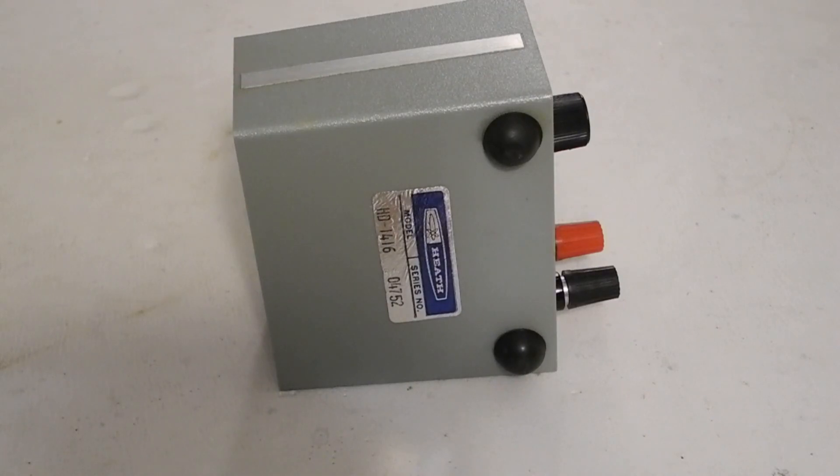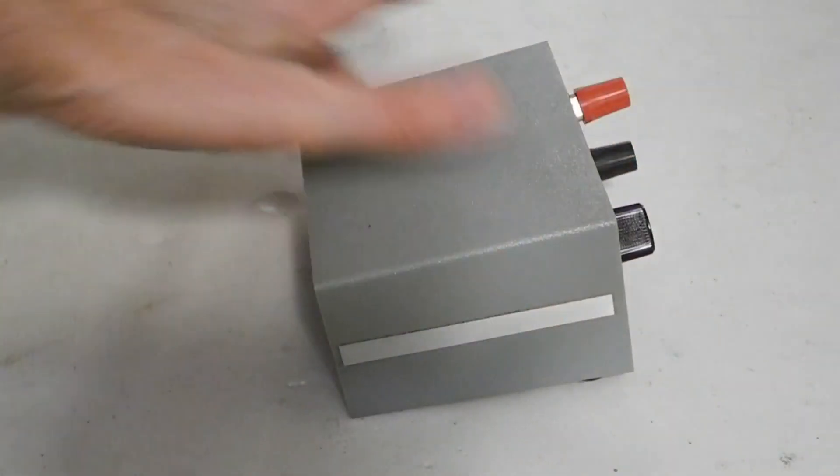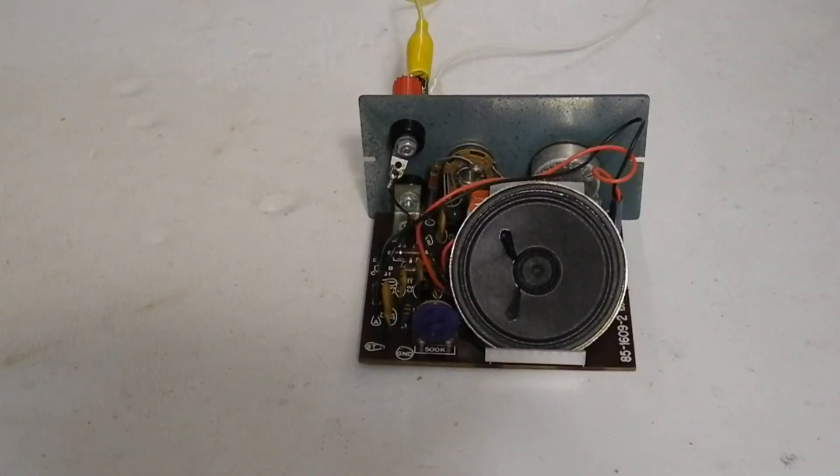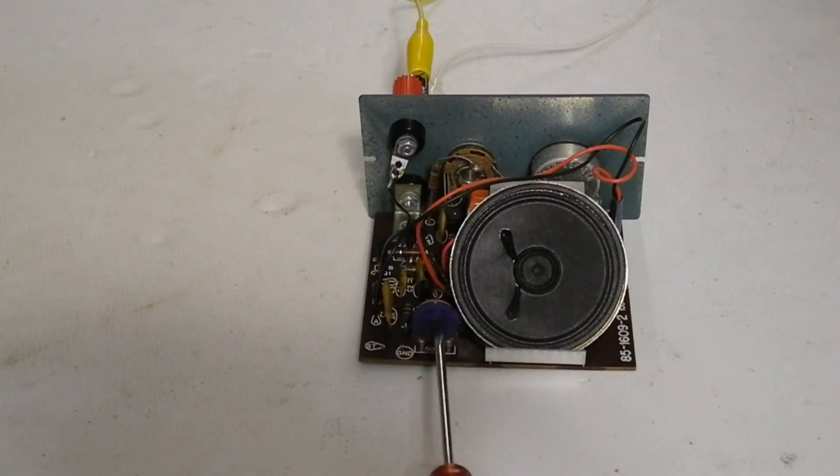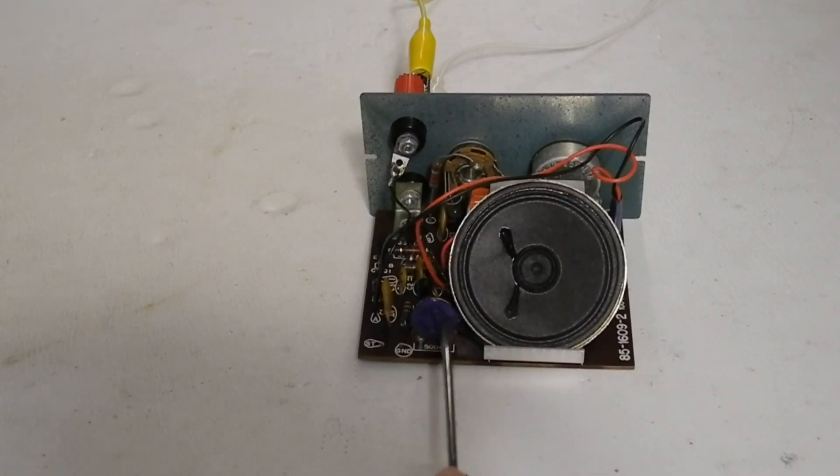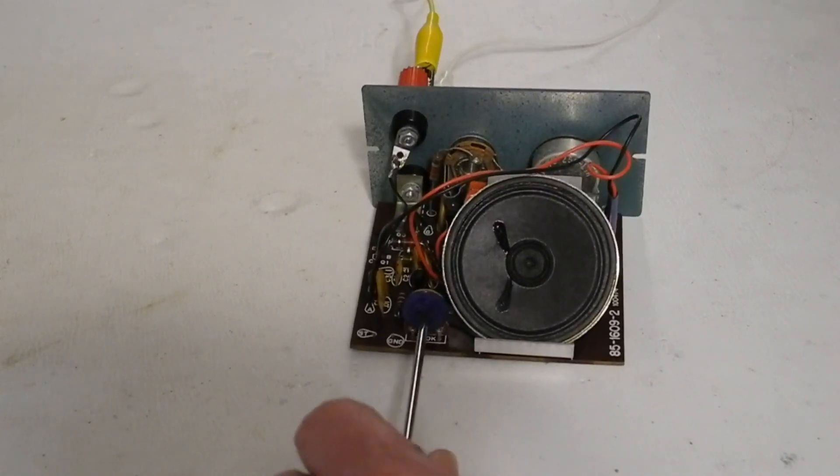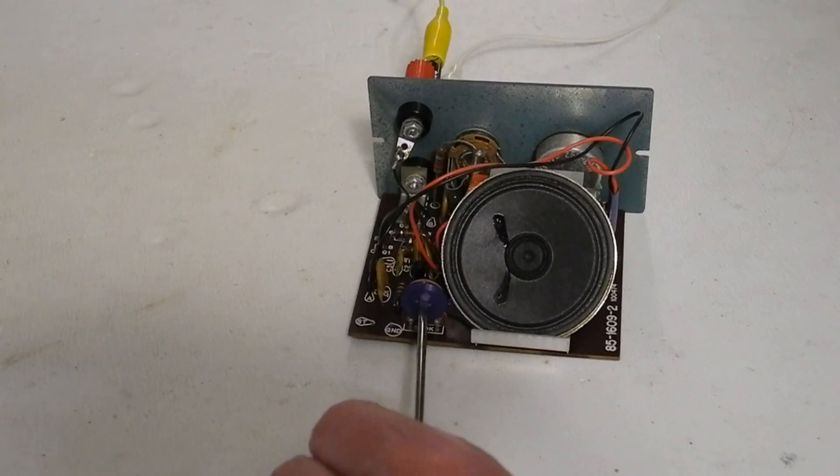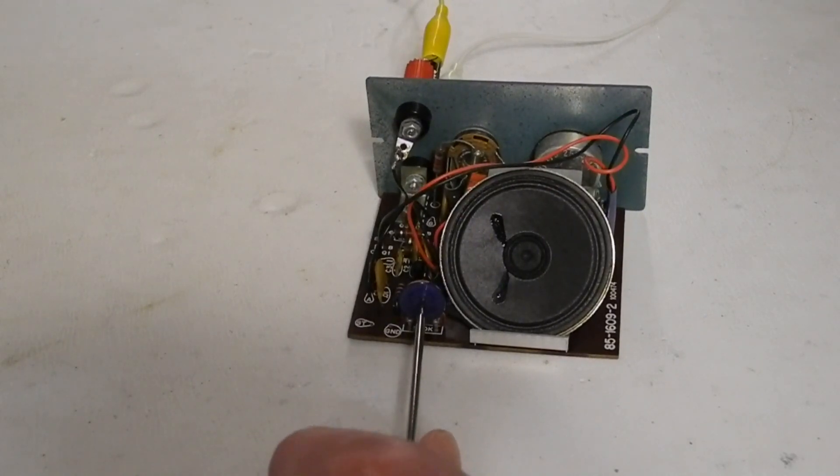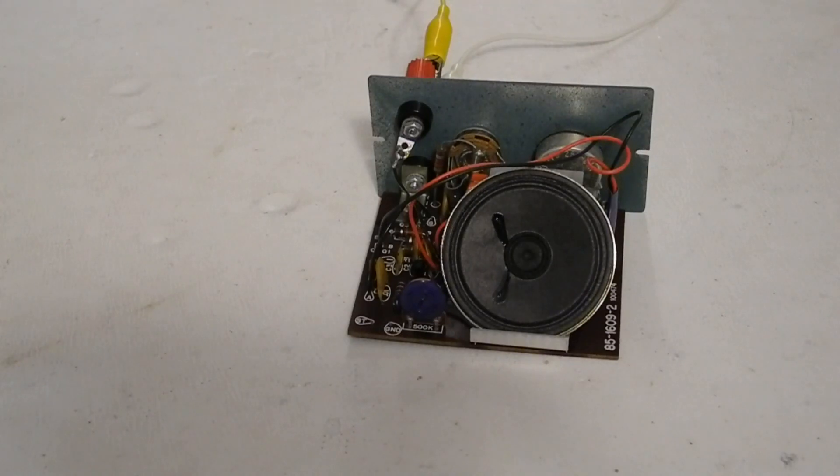The feet appear to be original but there should have been four. I suspect the original builder intentionally left the back two off in order to angle the unit up a little bit more. Adjusting the frequency trimmer I got a range of frequencies from 266 Hz to 971 Hz. I adjusted it for a side tone of about 700 Hz which I typically use in my other equipment.